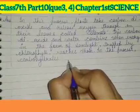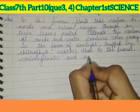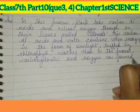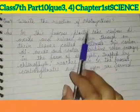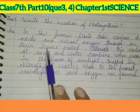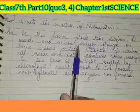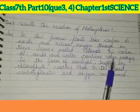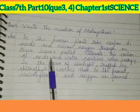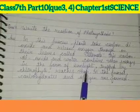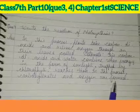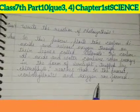Carbohydrates and oxygen are formed. In this process, plants take carbon dioxide and release oxygen gas through their leaves, called stomata. Carbon dioxide and water combine, and the energy in the form of sunlight is trapped by chlorophyll to form carbohydrates and oxygen gas.